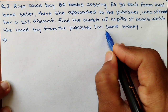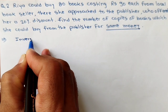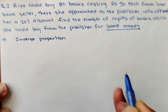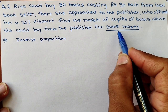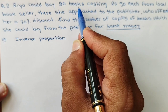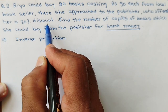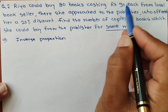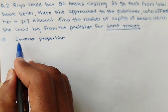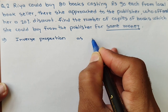Here, the same money is spent, so this is a case of inverse proportion. The total money is a fixed quantity. In the first condition, she could buy 80 books. But in the next condition, the cost is reduced — a 20% discount is given — so the number of copies will increase. This is inverse proportion because money is the fixed quantity.